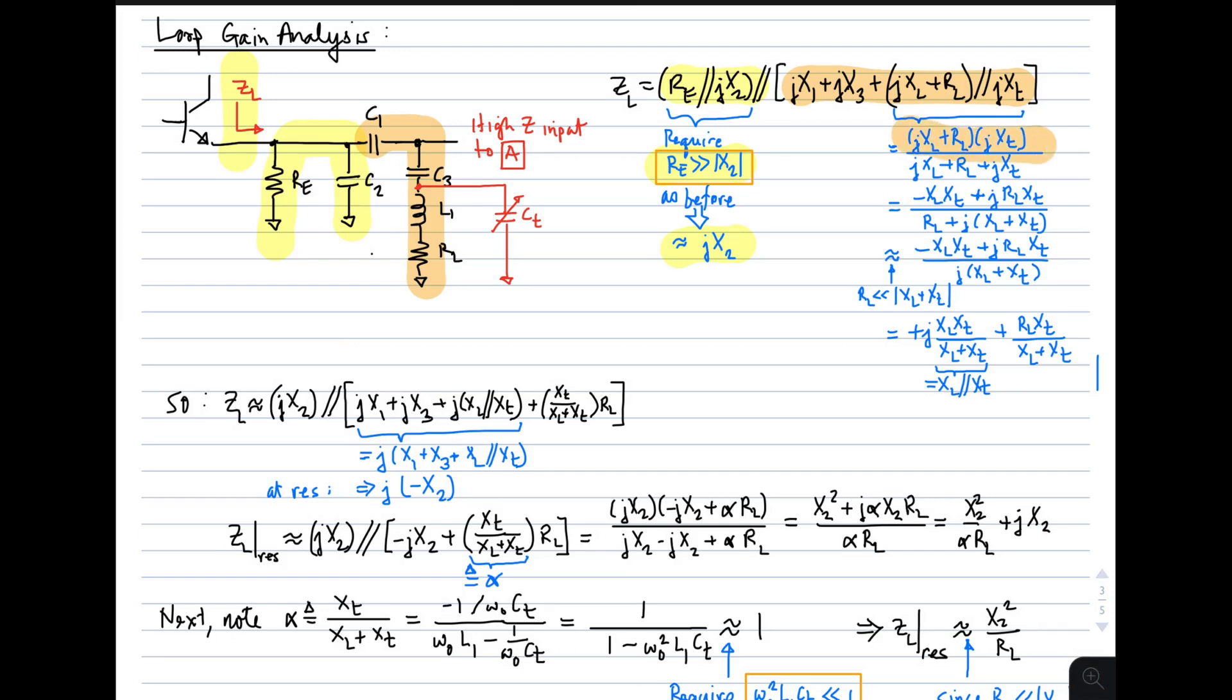On the other side, I expand out this expression. We're just writing it out as the product over the sum. Now I invoke the idea that the series resistance of the inductor should be much less than its reactance plus that of the tuning capacitance, and I get this simplified expression. I can split those two terms as shown here, and then I simply note that this part right here is X sub L in parallel with X sub T. So the expression we get for the output impedance is that it's approximately equal to the impedance of C2 in parallel with this thing.